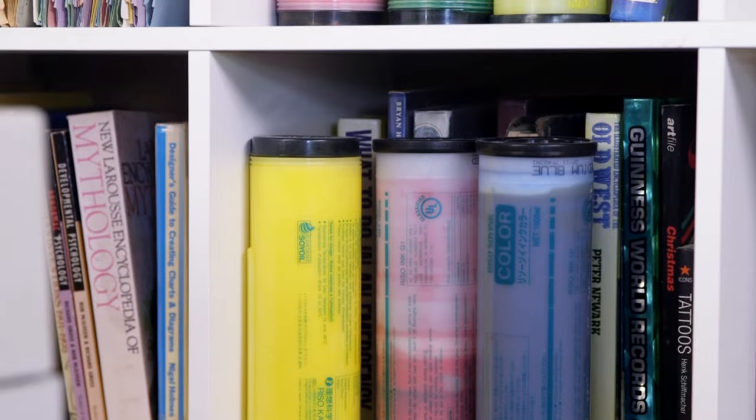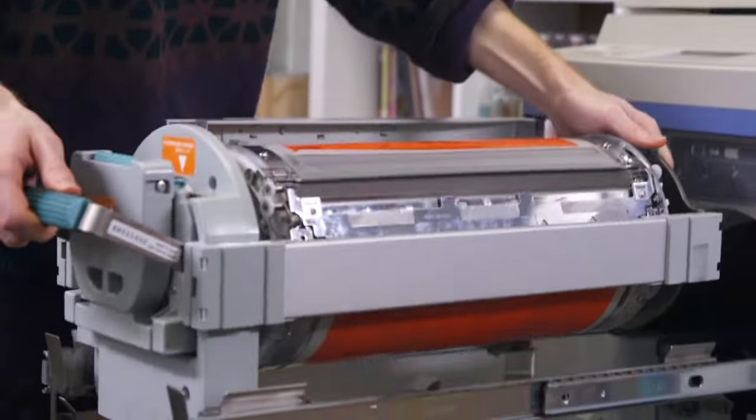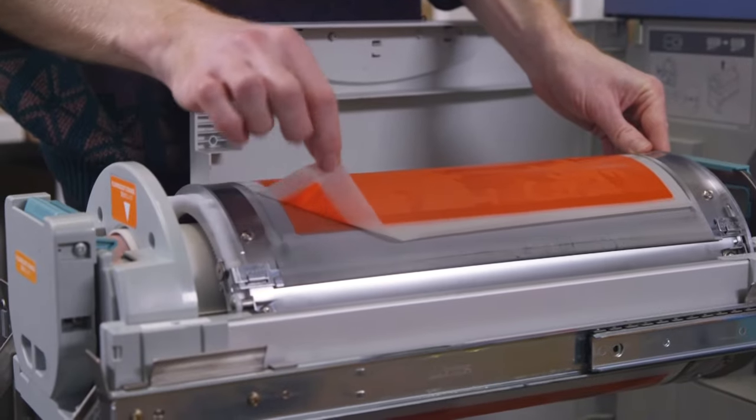The Risograph prints one color at a time. You have to grab the color drum you want to print with. It makes a disposable screen that wraps around the drum. This is called the master.